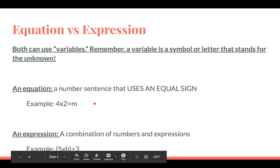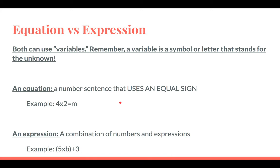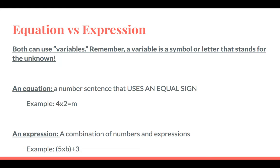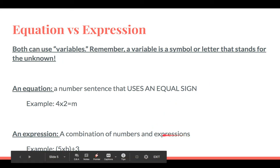Another concept that tricked us in class was the difference between equations and expressions. Both equations and expressions use variables. Remember, a variable is a symbol or letter that stands for the unknown. An equation is a number sentence that uses an equal sign — for sure going to have an equal sign. For example: 4 times 2 equals m, where m is the variable.